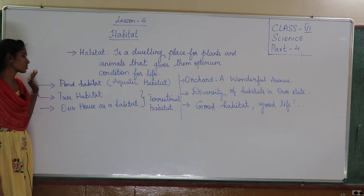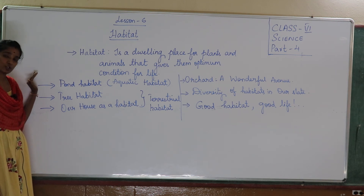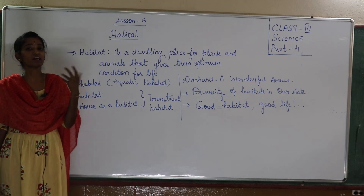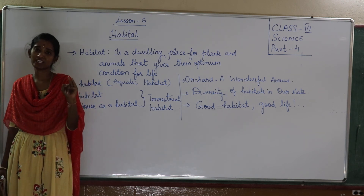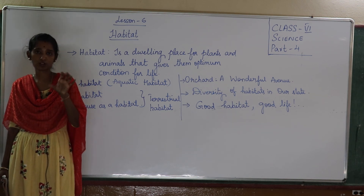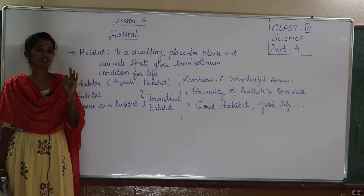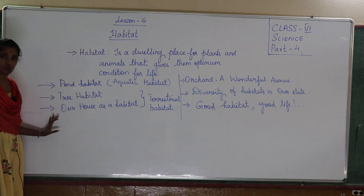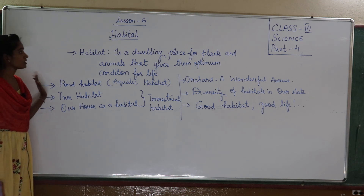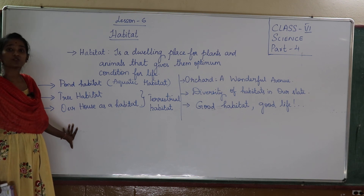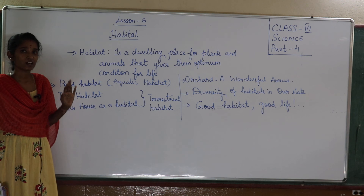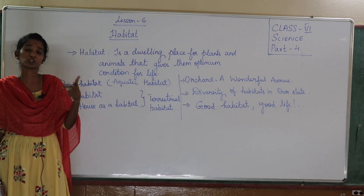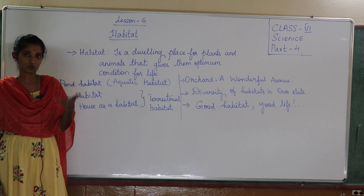So we should always ensure that we are not spoiling the habitat. Instead of spoiling, just don't throw anything there — that is the best option. Either we plant a tree, or take care of pet animals. Ensure that the animals you are taking care of are in very good condition — given proper food and proper love and a house. That is very important for the terrestrial habitats. So in this lesson we have learnt what are the types of habitats, what is the diversity of habitats, and how a good habitat should be maintained.